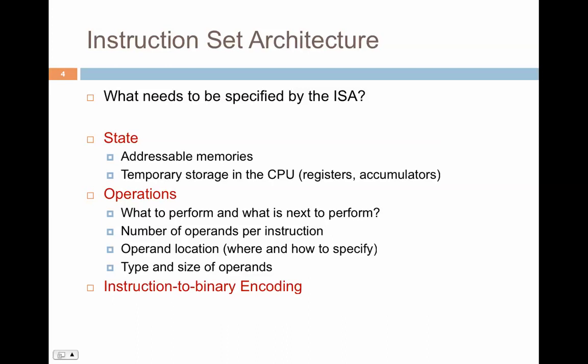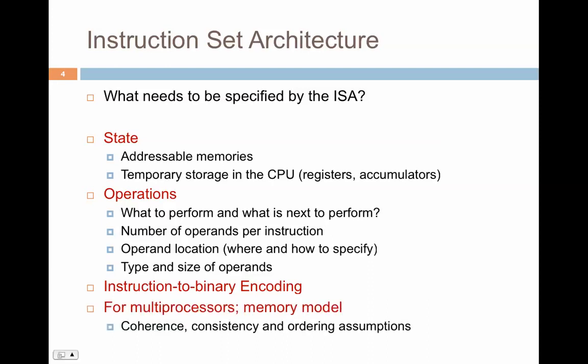When you scale up from a uniprocessor to a multiprocessor or multicore architecture, you need to worry about other aspects such as coherence. Coherence is the way in which values stay consistent across multiple caches, because each processor has its own cache and may have data in its own cache at any given point in time. To ensure data stays consistent, you need a cache coherence protocol that maintains consistency across values in multiple processors.